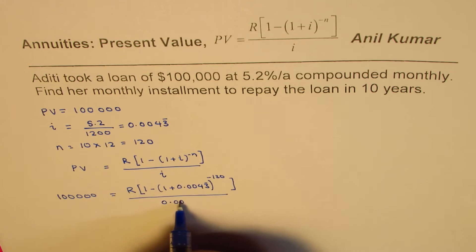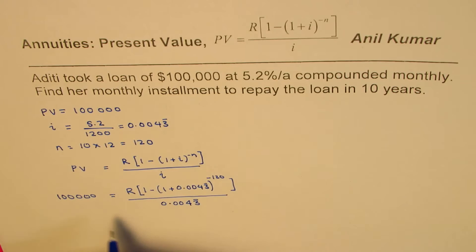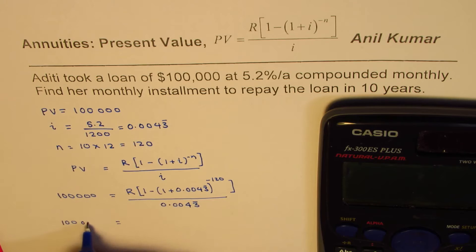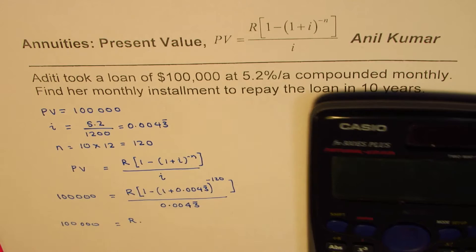Let's calculate this value first and then we'll divide 100,000 by that value. So we can write this as 100,000 equals R times this calculated value.